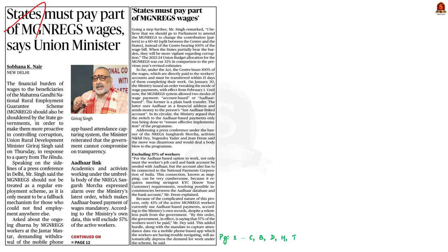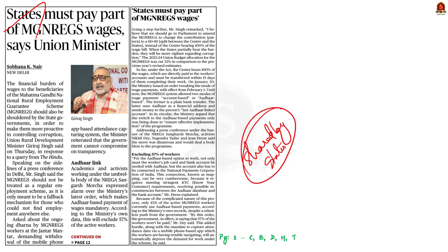The Union Rural Development Minister mentioned that the financial burden of MG NREGA must be shared by the states, saying this will help states become proactive and curb corruption. He also mentioned that MG NREGA is not a regular employment scheme — it is only meant to be a fallback mechanism for those who could not find employment anywhere else. National Rural Employment Guarantee Act 2005 is a social security measure that aims to guarantee the right to work.